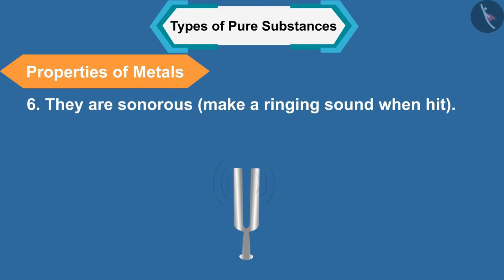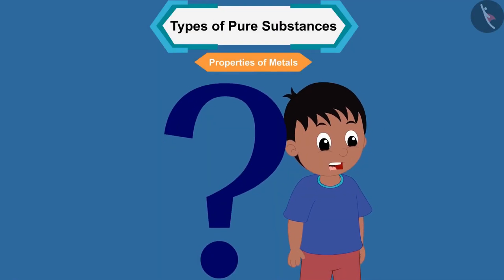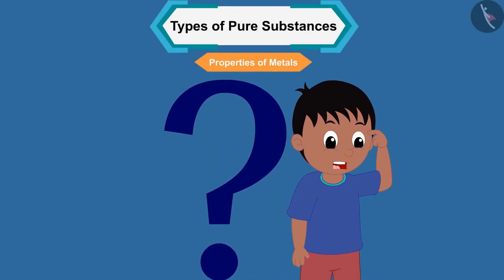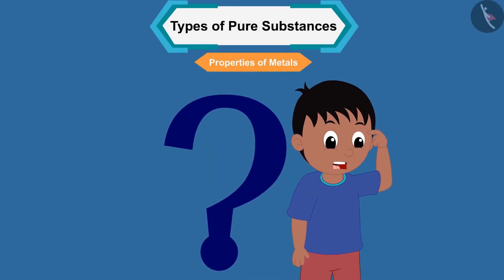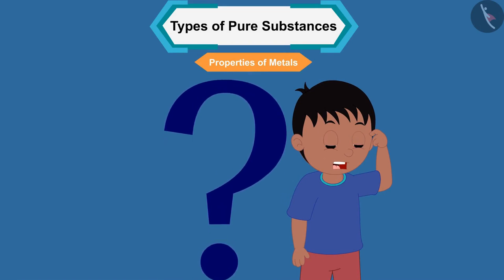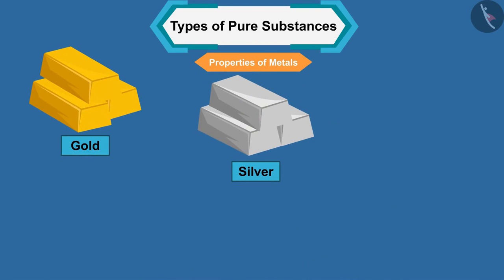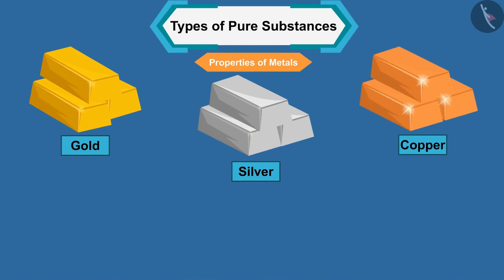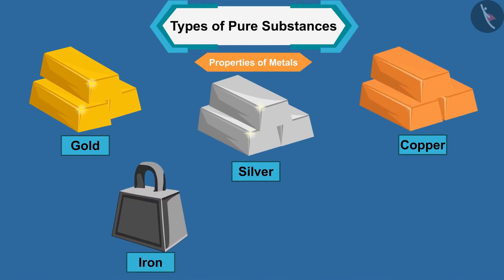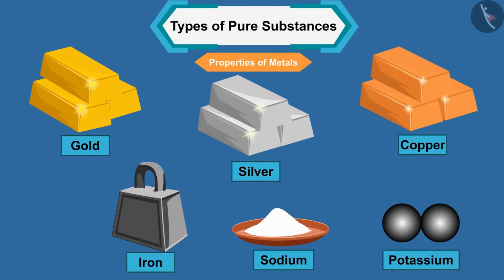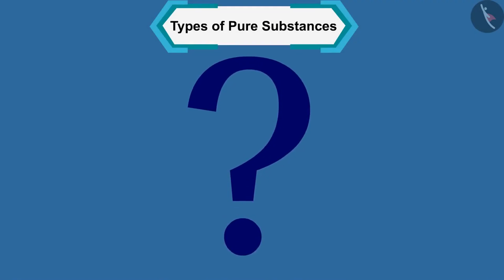Five, they are malleable and can be hammered into thin sheets. Six, they are sonorous and make a ringing sound when hit. You may be thinking what can be the examples of a metal with so many properties — gold, silver, copper, iron, sodium, potassium, etc. are examples of metals.